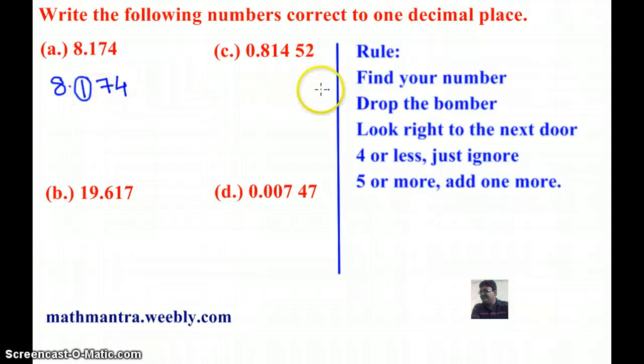And then I'm going to look right to the next door. So next door number is 7. Now 7 is greater than 5. And therefore, according to the rule, I must add 1 to the number circled. So I'm going to add 1 to 1. So I get 8.2. Now note that the answer will have only one digit after the decimal because rounding off the number correct to one decimal place.